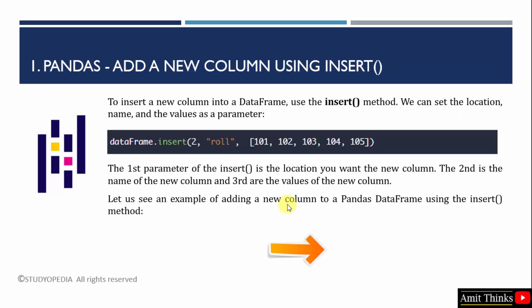Let us see the first example. We will add a new column using the insert method. This will allow you to add the location of the new column, the name of the new column, and the data of the new column. The insert method has the following parameters: the first allows you to add the location where you want the new column, the second will be the name of the new column, and the third will include the values of the new column.